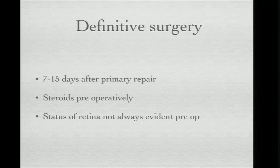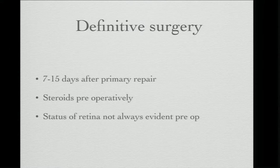Subretinal blood can be variable in extent, and subretinal gliosis can range from thin bands to thick sheets covering the entire subretinal surface. These thick sheets may not be obvious until pre-retinal membranes are removed — then you find the retina is very stiff not because of intraretinal gliosis but because of a subretinal membrane sheet. Definitive surgery is usually planned about seven to fifteen days after the primary repair.